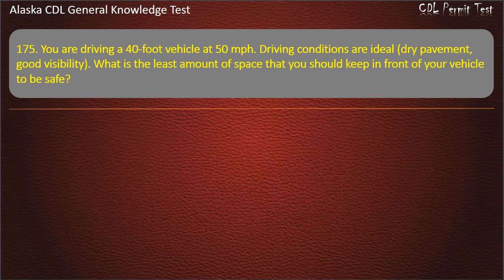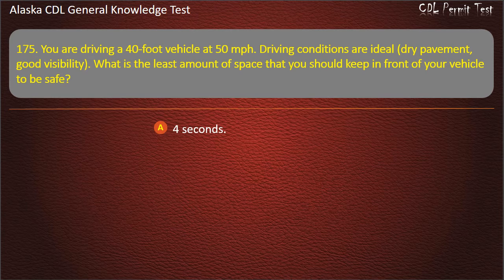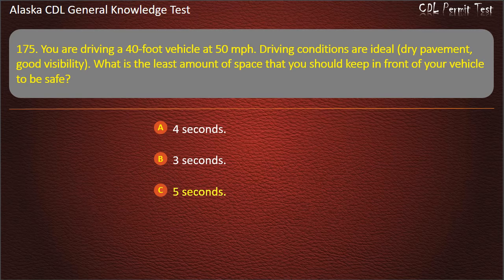Question 175. You are driving a 40-foot vehicle at 50 miles per hour. Driving conditions are ideal — dry pavement, good visibility. What is the least amount of space you should keep in front to be safe? 4 seconds, 3 seconds, or 5 seconds. Answer: 5 seconds.